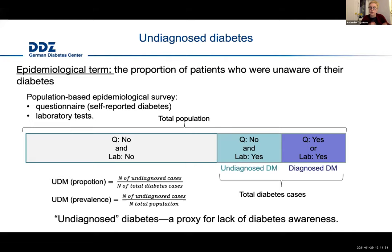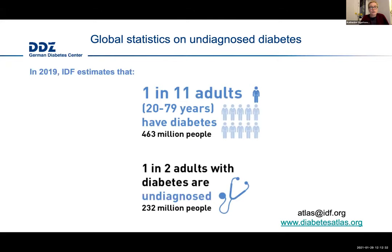We usually report undiagnosed diabetes as a proportion — the number of people with undiagnosed diabetes divided by total diabetes cases — or as a prevalence in the total population. It is important to remember that undiagnosed diabetes is a proxy for a lack of diabetes awareness. You can see in publications such terms as suspected diabetes, unknown diabetes, or new diabetes. In 2019, the International Diabetes Federation estimated that 463 million people in the world live with diabetes, and almost every second person with diabetes is unaware — meaning 232 million people are living with undiagnosed diabetes.